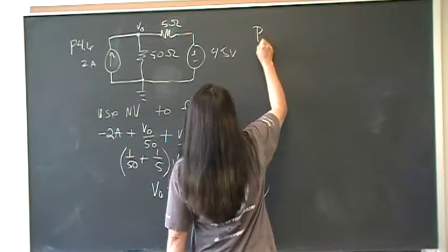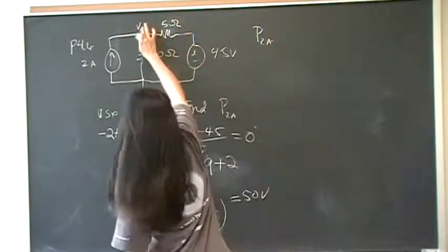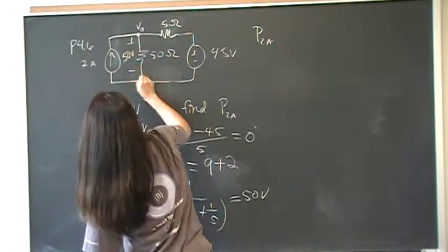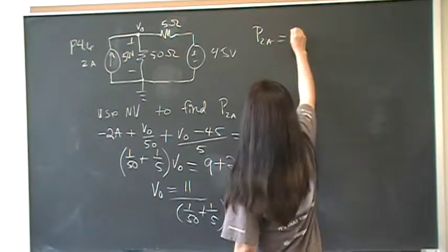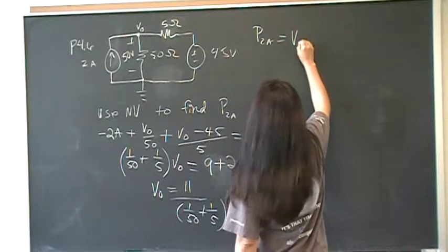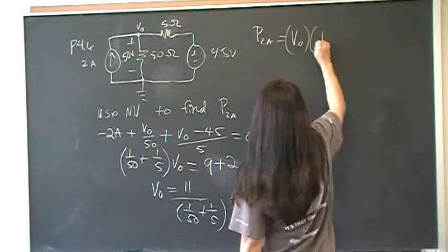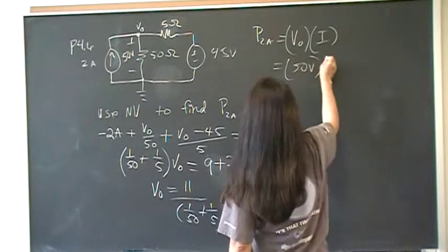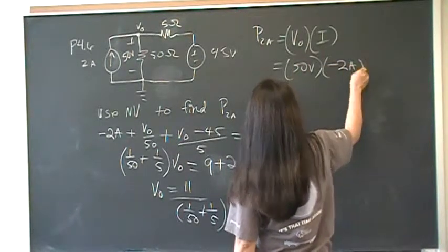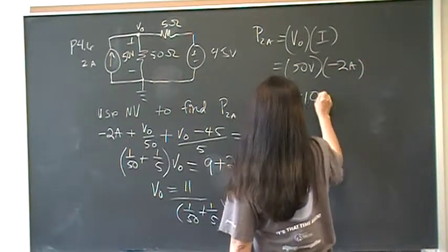So, P sub 2A, so now we know this is 50 volts right here. So, the power then is going to be V0 times I. Well, V0 is 50 volts, and current is negative 2 amps. So, that's going to be negative 100 watts.